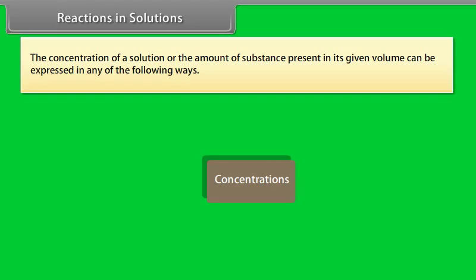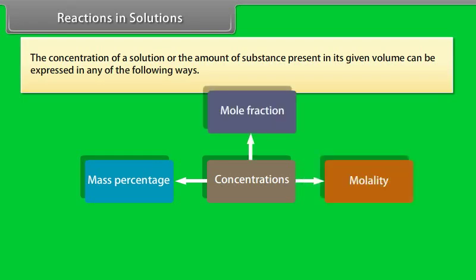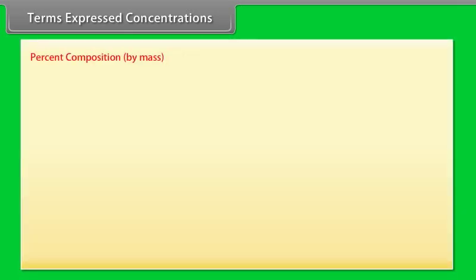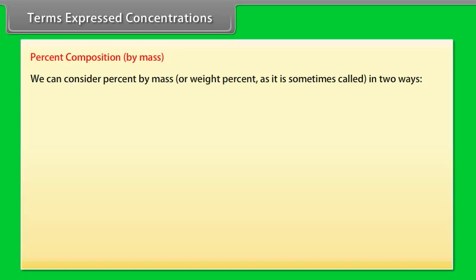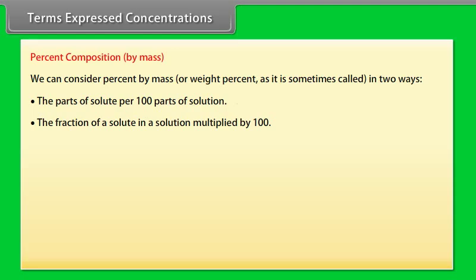Reactions in Solutions. The concentration of a solution, or the amount of substance present in a given volume, can be expressed in the following ways: 1. Mass percent, 2. Mole fraction, 3. Molality, 4. Molarity. For mass percent: percent composition by mass = (mass of solute / mass of solution) × 100.